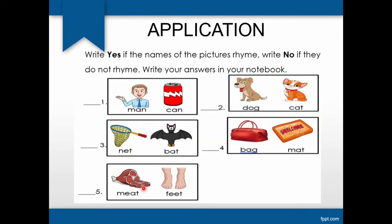For the application activity, write yes if the names of the pictures rhyme and write no if they do not rhyme. I will read: man, can. Net, bat. Meat, feet. Dog, cat. Bag, mat.